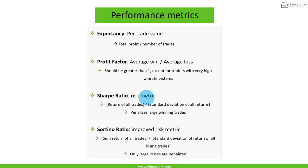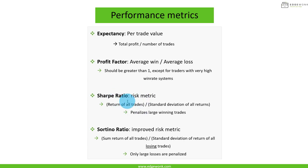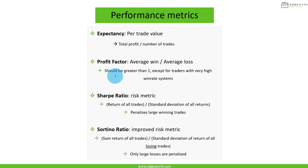Next is the Sharpe ratio, which although quite common, we don't recommend using it. The formula takes the return of all trades divided by the standard deviation of all returns. The problem is the Sharpe ratio penalizes large winning trades, which is obviously not good — a large winning trade doesn't mean your system is bad. Instead, we recommend the Sortino ratio, which is an improved version. It divides the return of all trades by the standard deviation of only the losing trades, so only large losses are penalized.